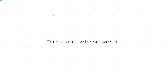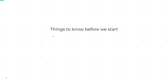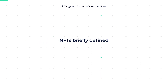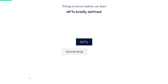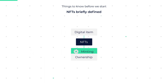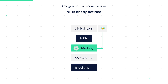Things to know before we start. NFTs briefly defined: NFTs are a way to verify true ownership of a digital item by attaching a unique key to it via a process called minting. When an NFT is minted, data that represents ownership is stored on a blockchain network, and whoever started the minting process is given the key that unlocks the ownership data on the blockchain.